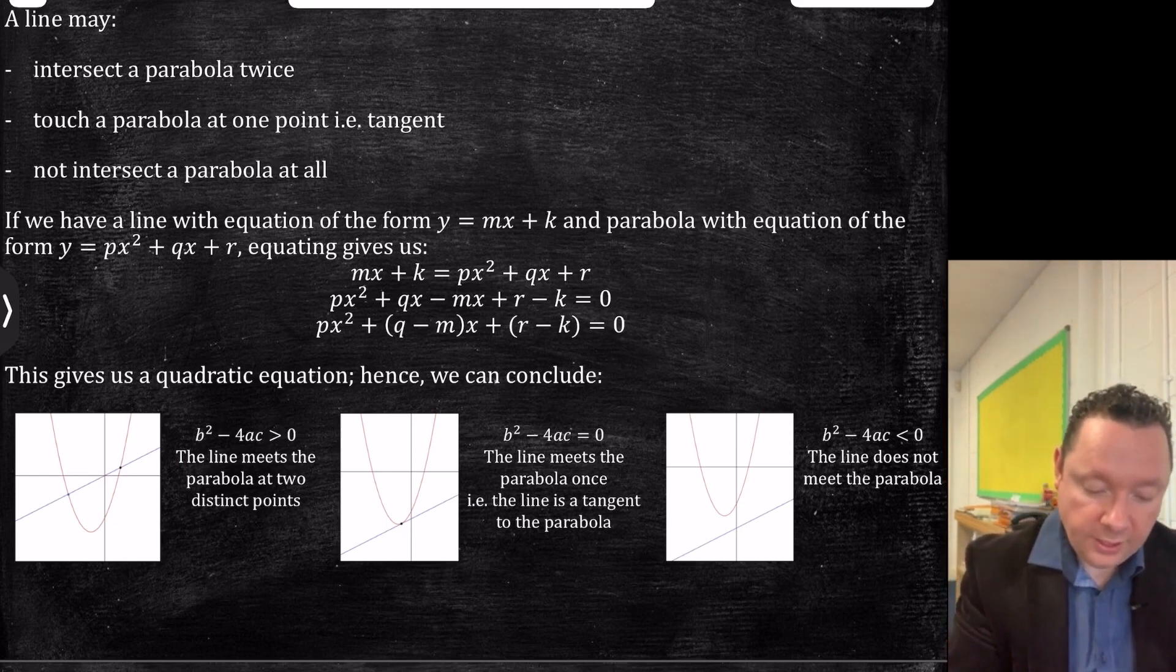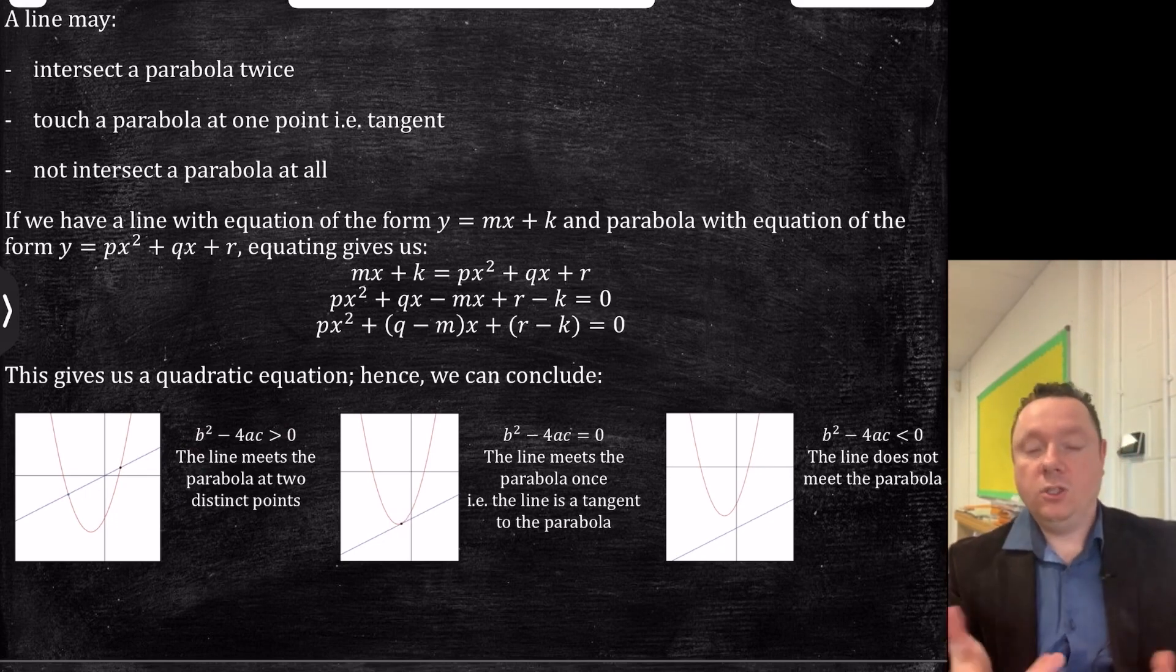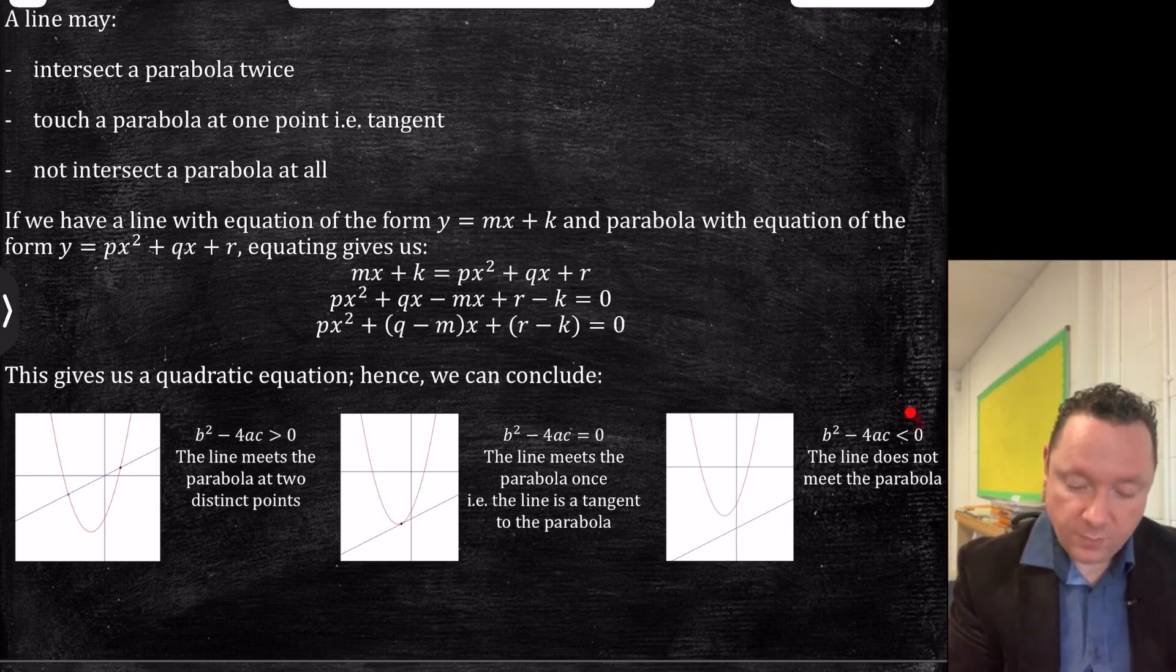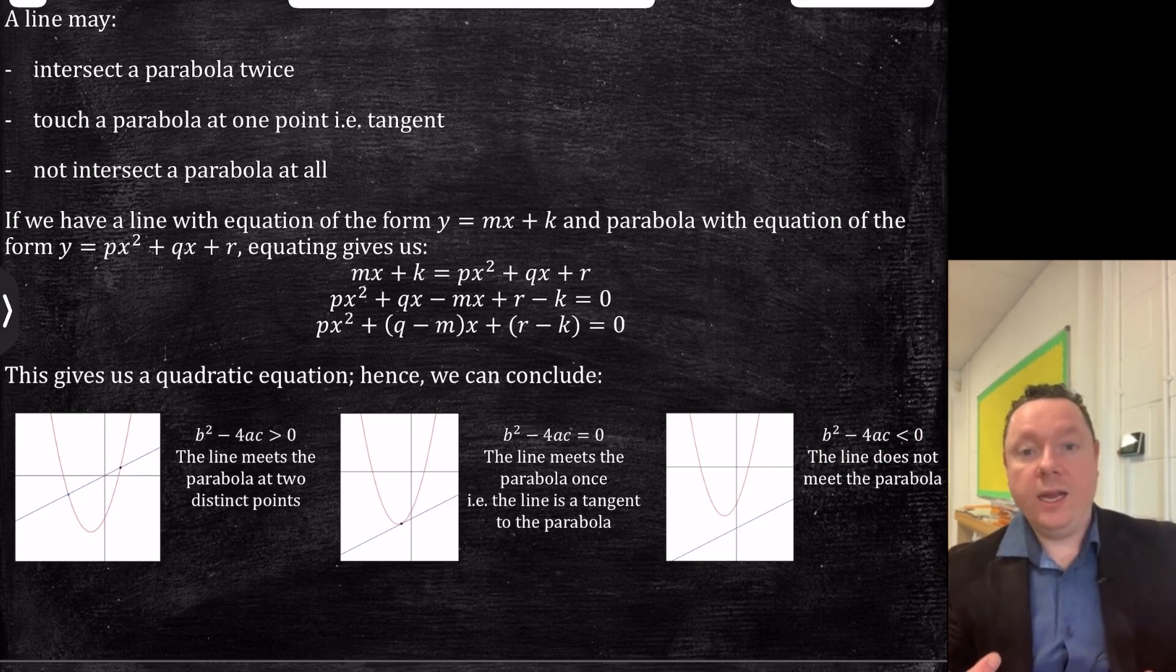If b squared minus 4ac gave you only one solution, that means it has to have only touched at one point. If b squared minus 4ac was less than zero, it means there's no solutions, no real roots anyway, which means the line can't be touched in the parabola. Otherwise, there would be a point that we can find.